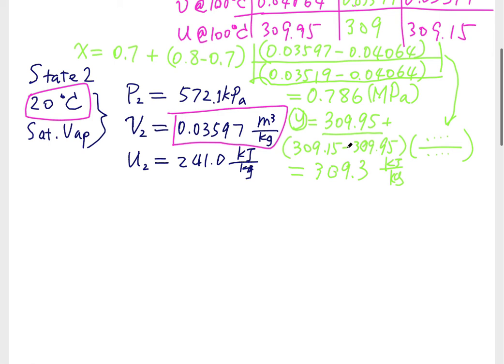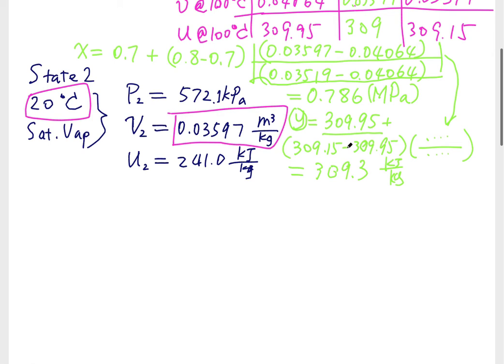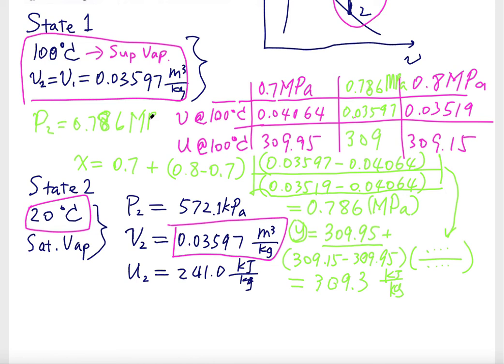And likewise, you can do 0.7, 0.8, 0.6 megapascal. And then, I'm sorry, this is the P1. And my answer for the U.